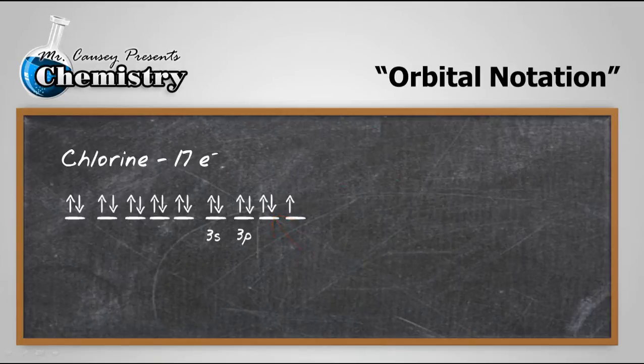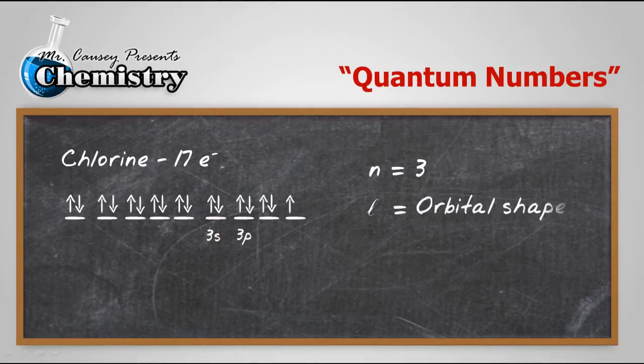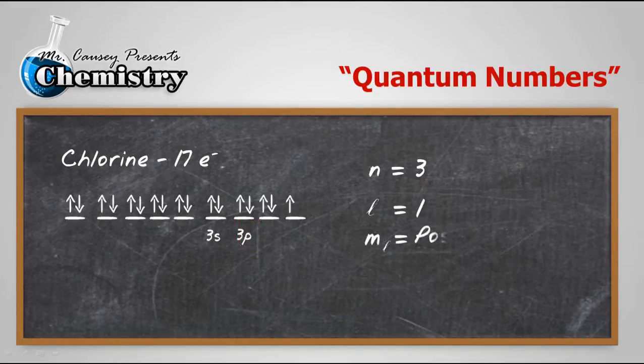So let's do the quantum numbers for that. N, which is for the energy level, is going to be 3. L, which is for the orbital shape. Now notice it's in a P orbital and the numerical value of P is 1. And then we're going to have M sub L, which is our position. And it is in the middle P orbital. So that's going to be 0.